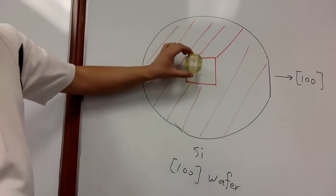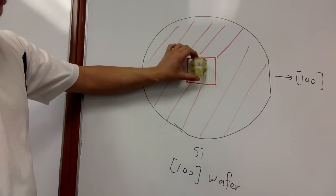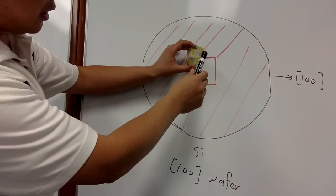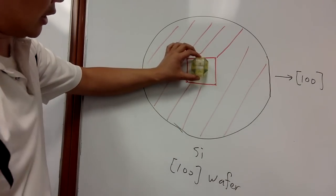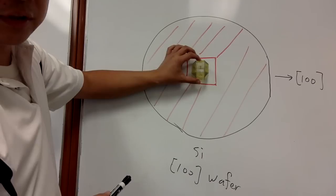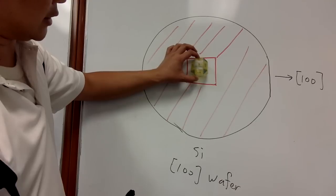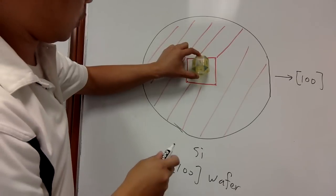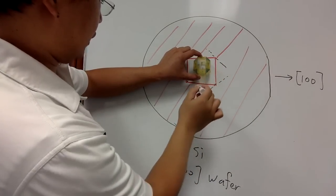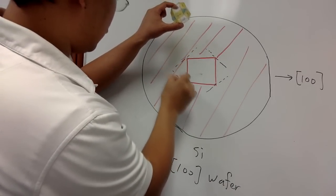This is a (100) wafer, so you align [100] perpendicular to the surface. You need to align the [100] direction at the flat. Where's [100]? It's the transparent color on the cube — aligned like this. Now find where the [111] directions are. Before they were aligned in parallel to [110]; now with this rotation, the four [111] directions are kind of in parallel to the other four directions — one, two, three, four on the other side.